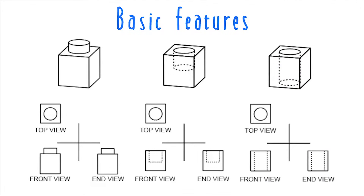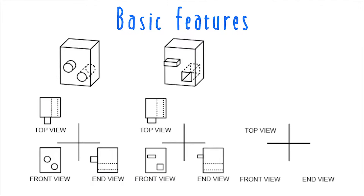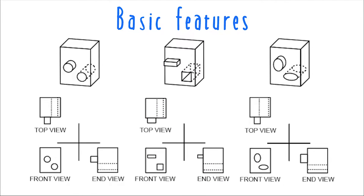Notice also that protrusions and cutouts in top front end problems may have different 3D shapes, and each of these shapes may look different when viewed from a different direction. Cylindrical protrusions and holes may look circular when seen straight on, but will look rectangular when seen from another view, just like actually rectangular protrusions and cutouts. Oval-shaped protrusions and cutouts also will look rectangular when you're not looking at them straight on, and there are a ton of different shapes that will look rectangular when seen from certain views.